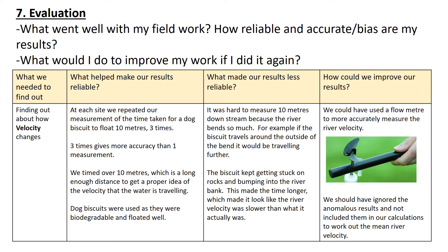To measure the velocity, what made results reliable was that at each site we repeated measurements three times, giving more confidence than a single measurement. We timed over 10 meters — long enough to get a proper idea of velocity — and used dog biscuits as they floated well and are biodegradable. The problem was it was hard to measure 10 meters downstream because the river bends so much; a biscuit traveling around the outside of a bend travels further than the inside. Also, biscuits kept getting stuck on rocks and bumping into the bank, making the time longer and the velocity appear slower than it actually was. To improve, we could have used a flow meter, and we should have ignored anomalous results where the float got stuck, removed them, and repeated those measurements.